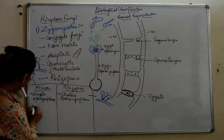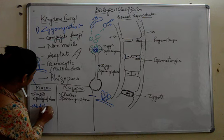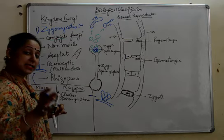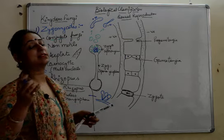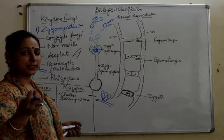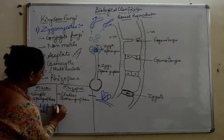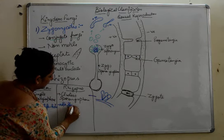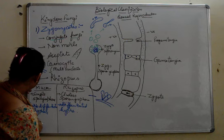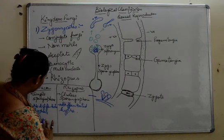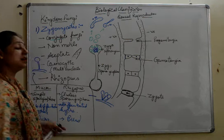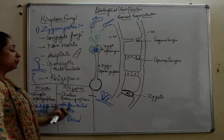The next difference is that mucor has no differentiated hypha. In our previous video we discussed that rhizopus has stoloniferous hypha as well as rhizoidal hypha. But in mucor there is no such differentiation — no stolon or rhizoidal hypha, only a single undifferentiated hypha. Also, mucor grows on dung or animal excreta, whereas rhizopus grows on bread, which is why it is known as bread mold.